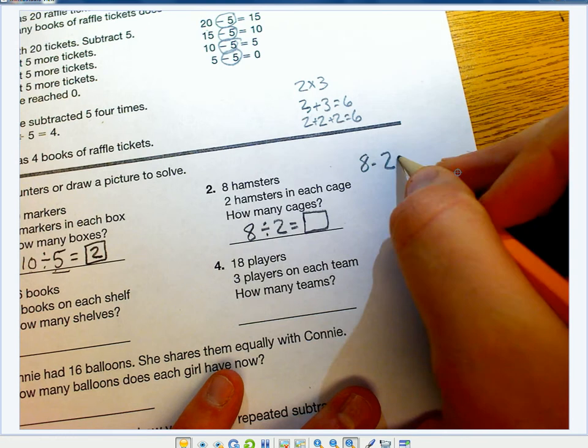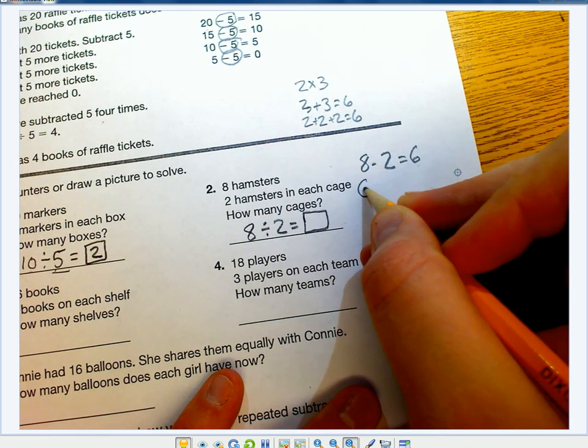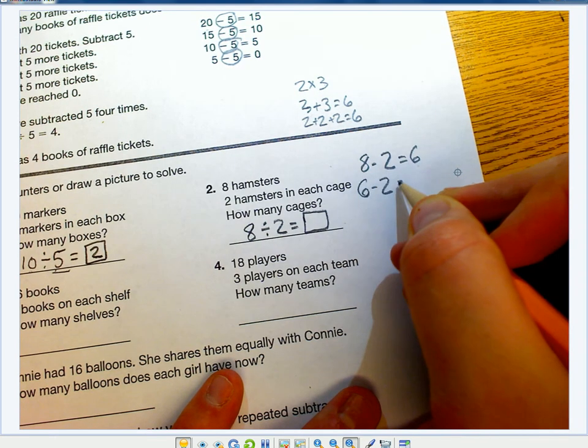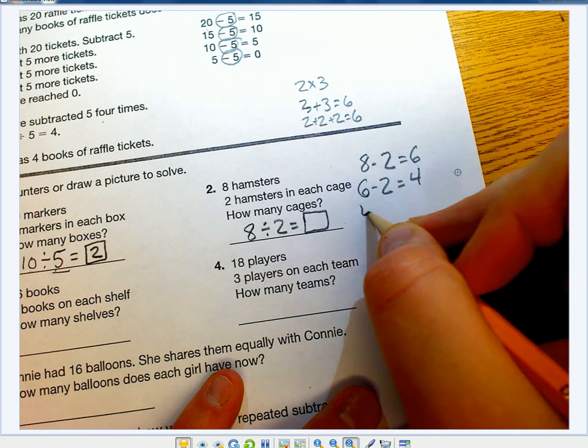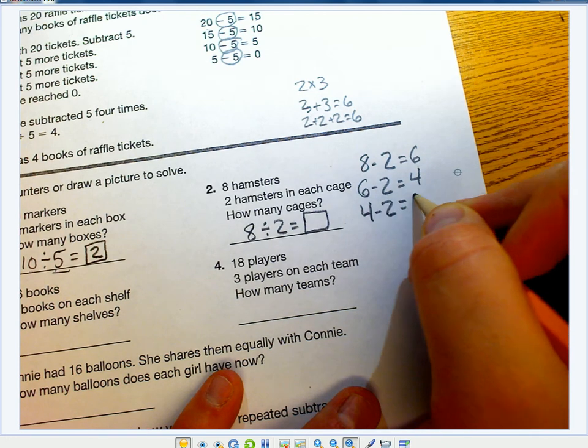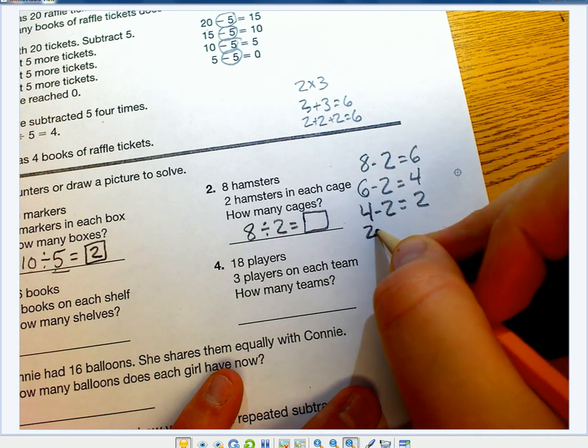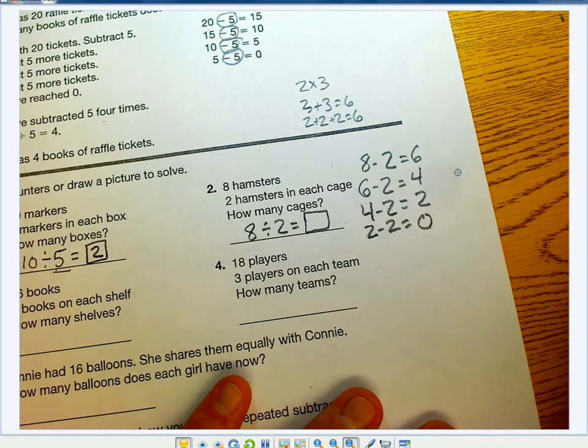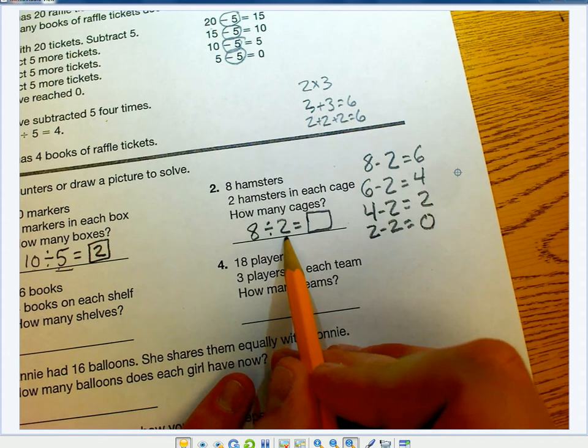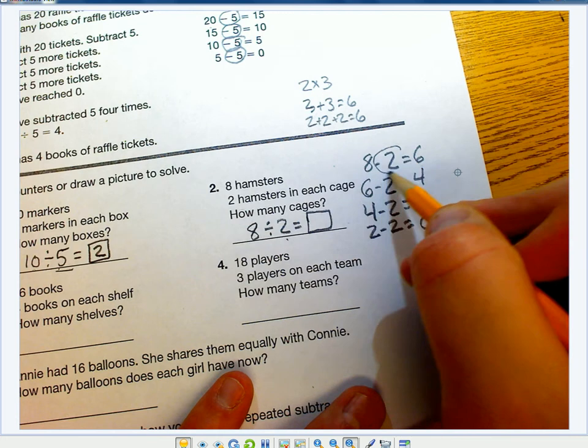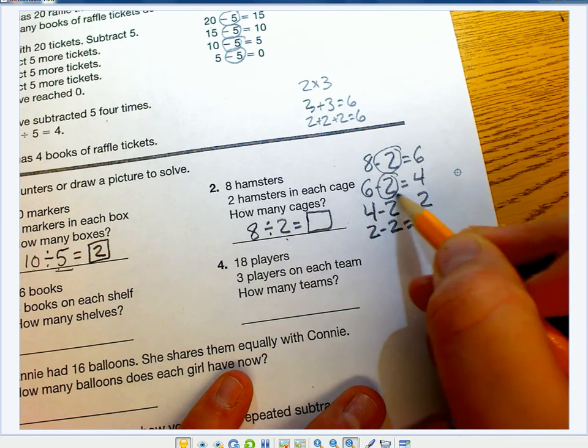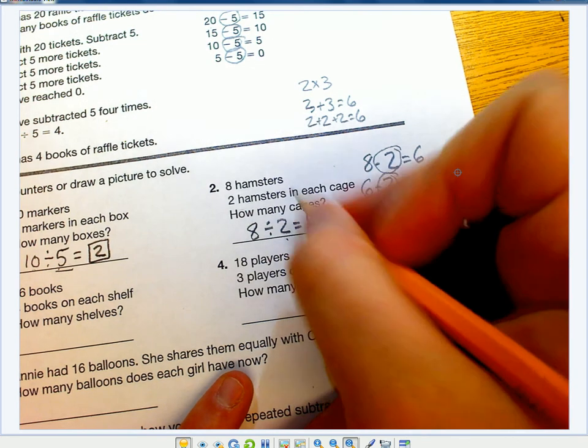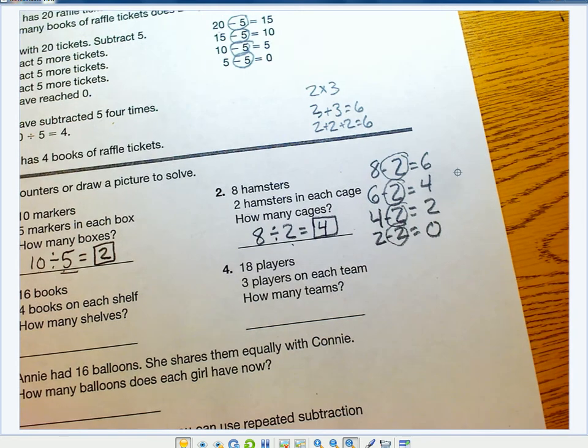I'm going to start with 8 and subtract 2. That equals 6. 6 minus 2 equals 4. 4 minus 2 equals 2. 2 minus 2 equals 0. The number I'm subtracting is 2. How many times? 1, 2, 3, 4. So the answer is 4 cages.